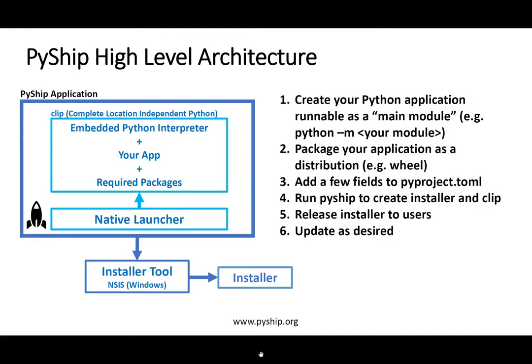As far as the overall architecture, PyShip utilizes existing Python capabilities in order to make it more straightforward to create an application that can be frozen. The first two steps are normal Python constructs. The first is to make your application runnable as a main module — in other words, with the -m switch. The second is to package your application as a Python distribution, which at this point is probably most likely a wheel. There are existing tools to make this relatively straightforward, such as Flit or the regular setup.py.